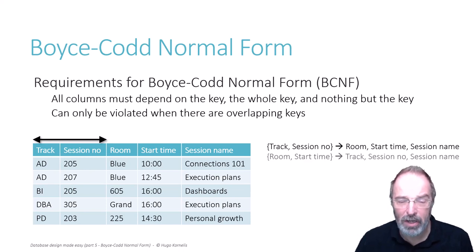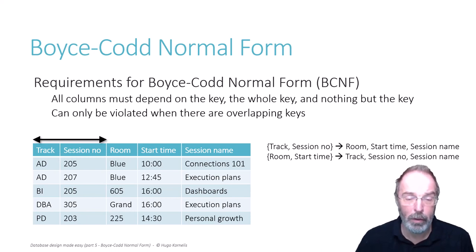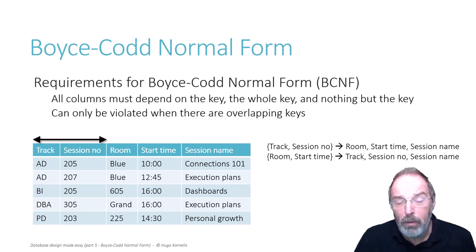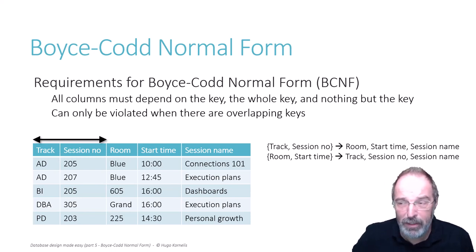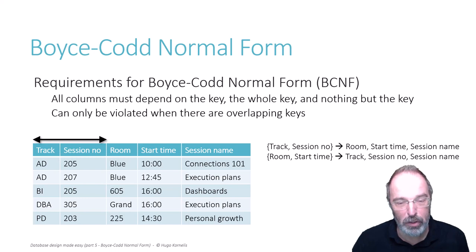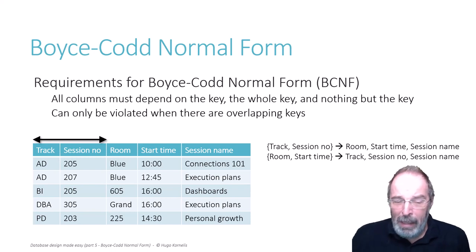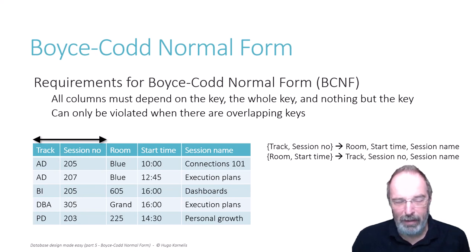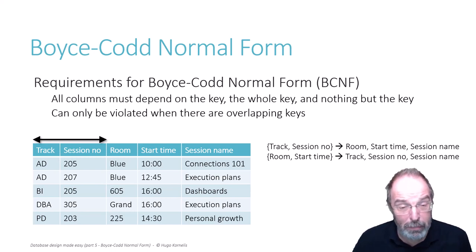If you look at another combination, room and start time, you will notice that this combination also determines the other columns. Because for a given room and start time, you only want a single session there. You do not want two sessions to start at the same time in the same room. Imagine Grant Fritchie and me side by side on the stage, him talking about personal development, me talking about execution plans, trying to wrest the microphone from each other's hands. We only want a single session, which means that room and start time combined is another candidate key in this table.